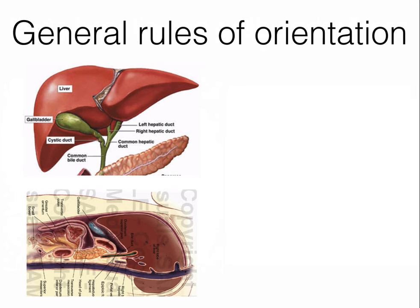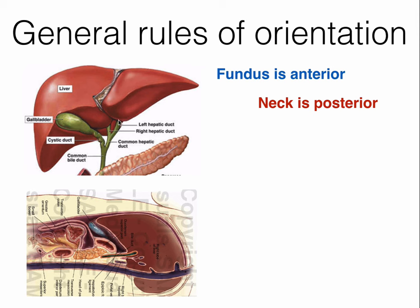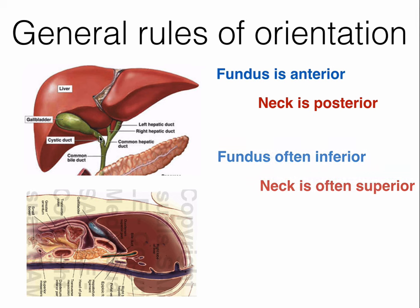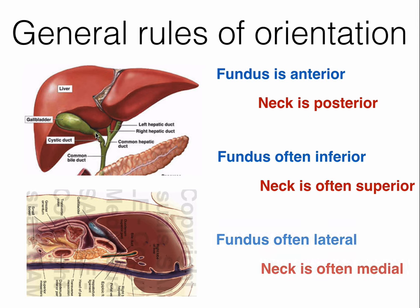The gallbladder is a very mobile organ and can change orientation based on body positioning and the respiratory cycle. In a supine patient, the fundus is usually anterior while the neck is often posterior; the fundus is often inferior to the neck which is superior; and often the fundus is more lateral while the neck is more medial.